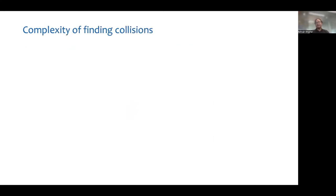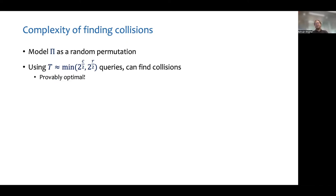We are interested in quantifying collision resistance of the sponge construction. And the usual approach is to model pi as a random permutation. One can show that when pi is a random permutation, there is an attack that finds collisions using a minimum of 2^(c/2) and 2^(r/2) queries. And in fact, this attack is proved optimal.